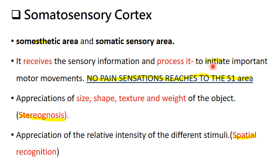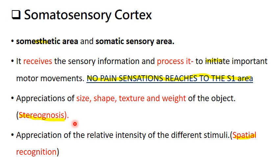It initiates motor planning movements. There is no pain sensation that reaches the S1 area, that is the primary somesthetic area. The appreciation of the size, shape, texture, and weight of an object is known as stereognosis. It is a very important property of the somatosensory cortex to perceive stereognosis.